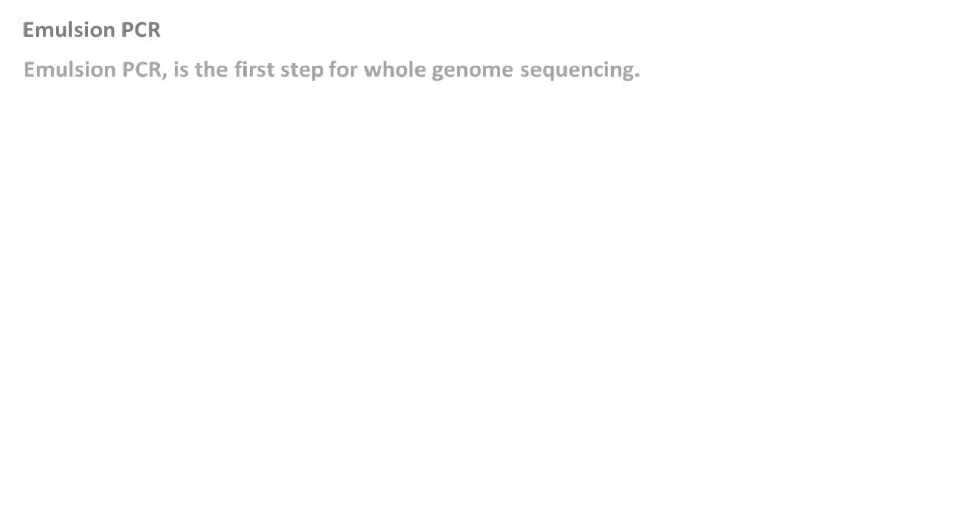Emulsion PCR is widely used for whole genome sequencing. This is actually the first step for whole genome sequencing. An emulsion is a mixture of oil and water.